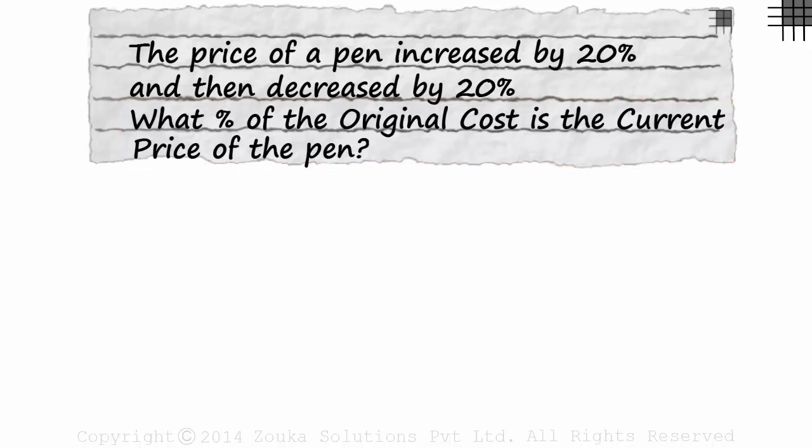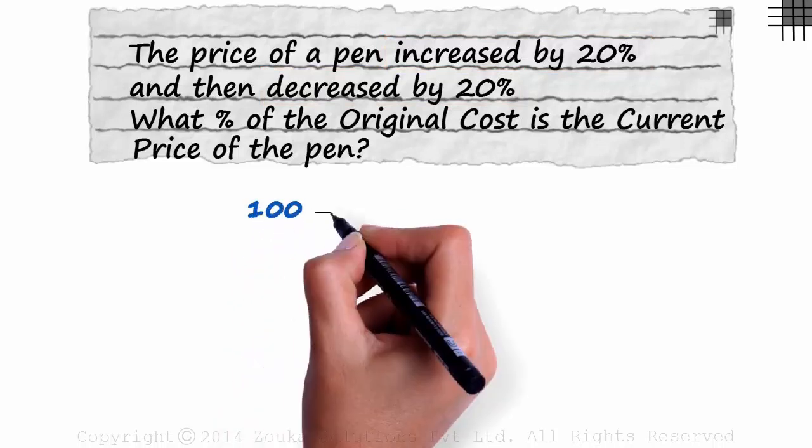This is interesting. Increasing it by 20% and then decreasing it by 20% does not result in a 0% change. That is the first thing you should know. We try increasing the number 100 by 20%.